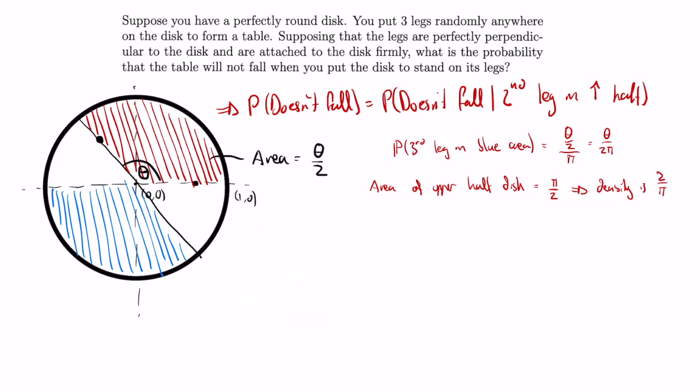Using polar coordinates, we can now integrate the density times the probability of theta over 2π that we calculated earlier over the upper half circle using r dr dθ instead of dx dy. Theta ranges from 0 to π, and r ranges from 0 to 1, and evaluating this integral gives 1/4.